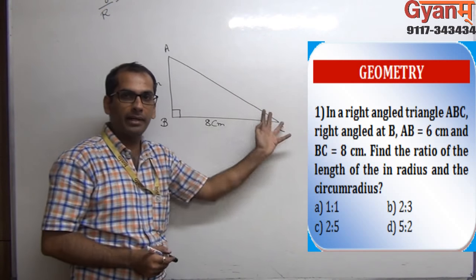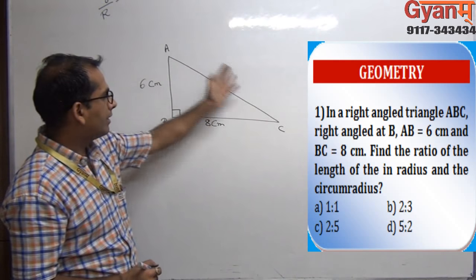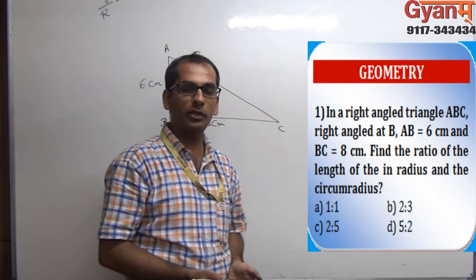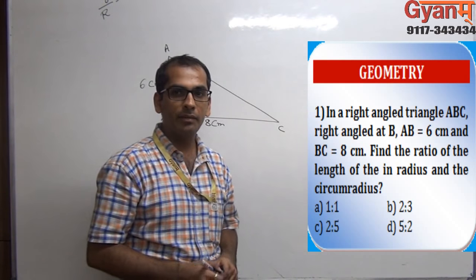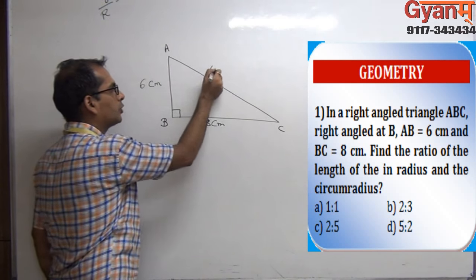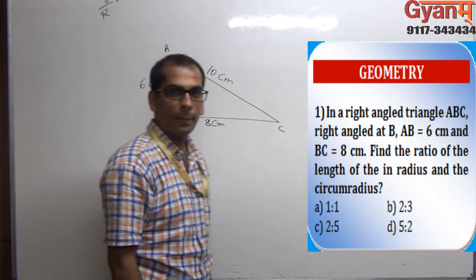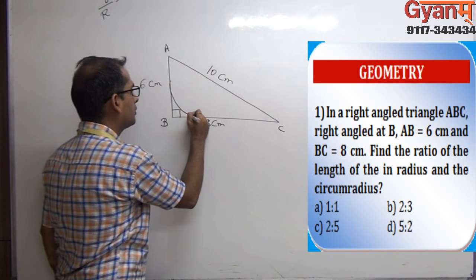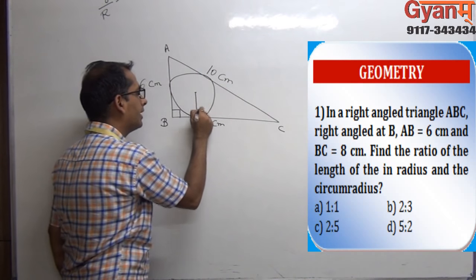First, let us find the hypotenuse of this right angle triangle. We can use the Pythagorean theorem, or using our knowledge of Pythagorean triplets, we can easily see that if one side is 6 and another is 8, the hypotenuse has to be 10 centimeters.